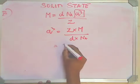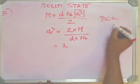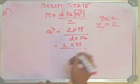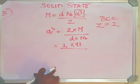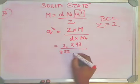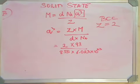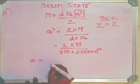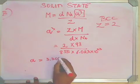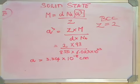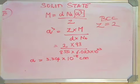I already have the data here. Z here is 2 because it's a BCC structure and BCC the value of Z would be 2. 2 multiplied by 93, 93 would be the atomic mass of Niobium, divided by the density which we looked at as 8.55 multiplied by Avogadro's constant. This should give you the value as the edge length A should be equal to 3.304 multiplied by 10 to the power of minus 8. Once again, use a scientific calculator to calculate all this. Otherwise it's impossible to do this on paper without screwing up major.